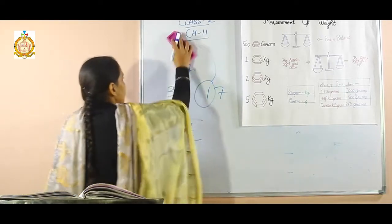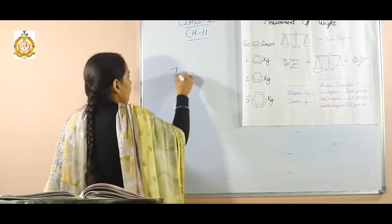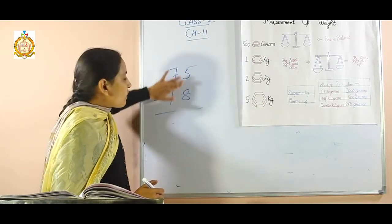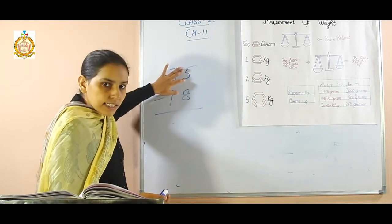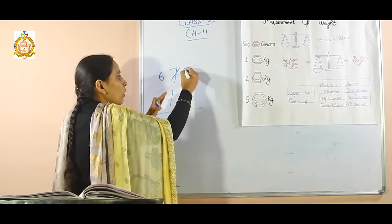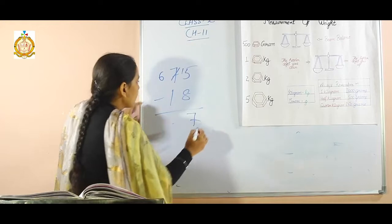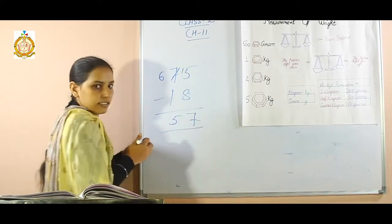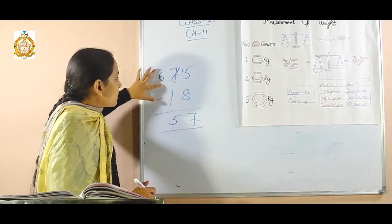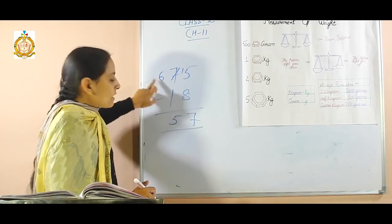Students, now let's do the subtraction sums. 75 minus 18. Subtraction also starts on the right hand side. 5 minus 8 — students, how can you subtract? 5 is the lesser term and 8 is the greater term, so take a borrow. Cut 7 and write 6, and write 1 on the left hand side of 5. It becomes 15. 15 minus 8 is 7, and 6 minus 1 is 5. That is the answer.